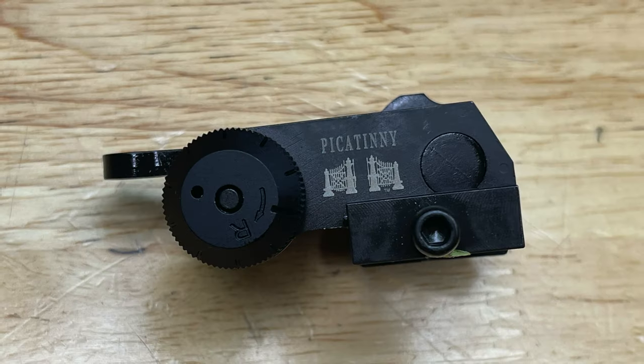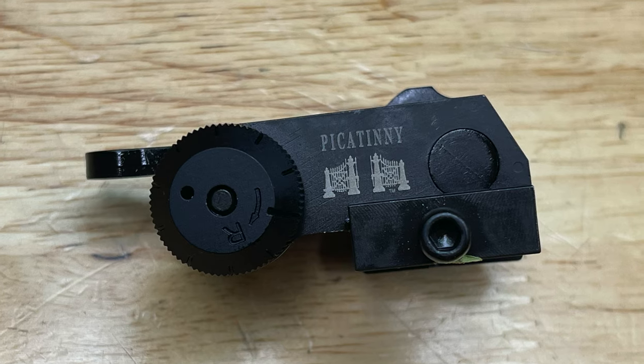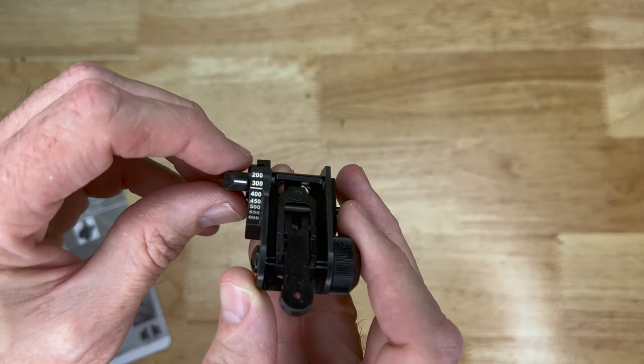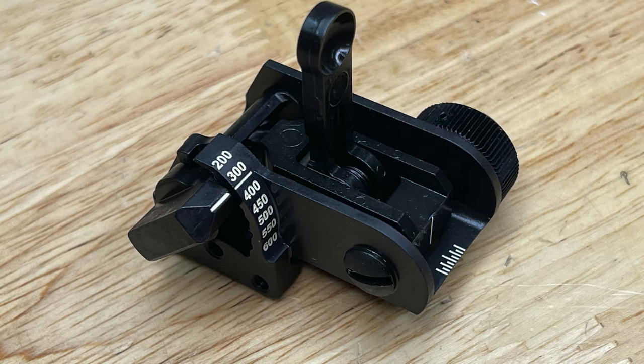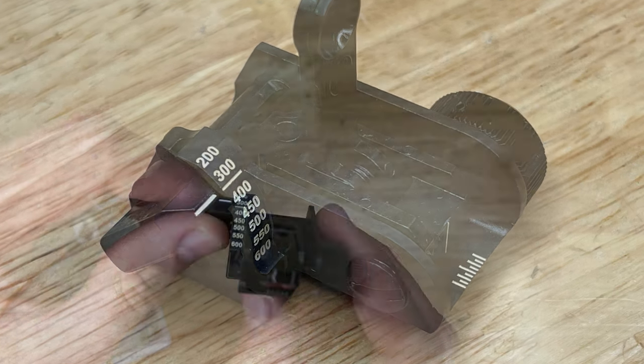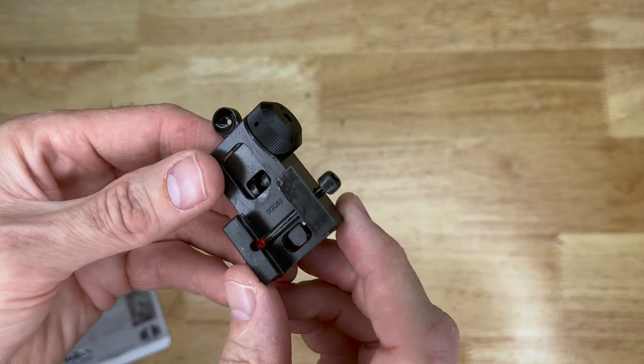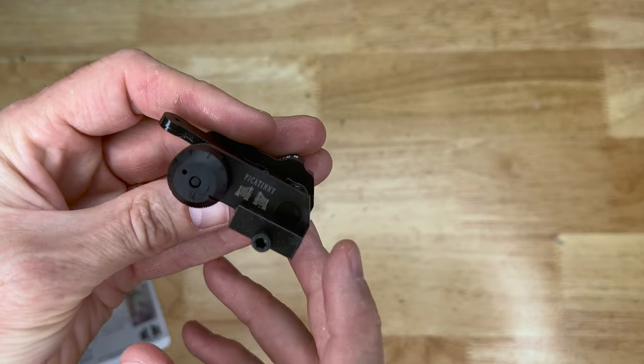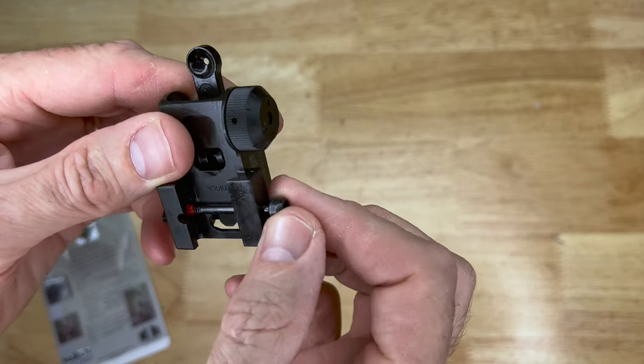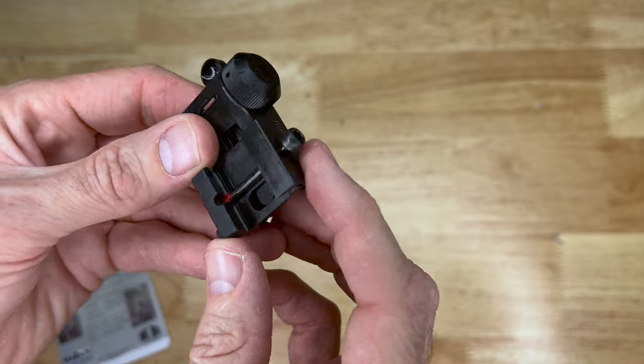It does have a windage adjustment here on the right. It does have an elevation adjustment. It's well marked for meters, so it's adjustable between two and six hundred meters. And it does attach to your Picatinny rail on top of the upper receiver, utilizing a screw clamp-in method here.